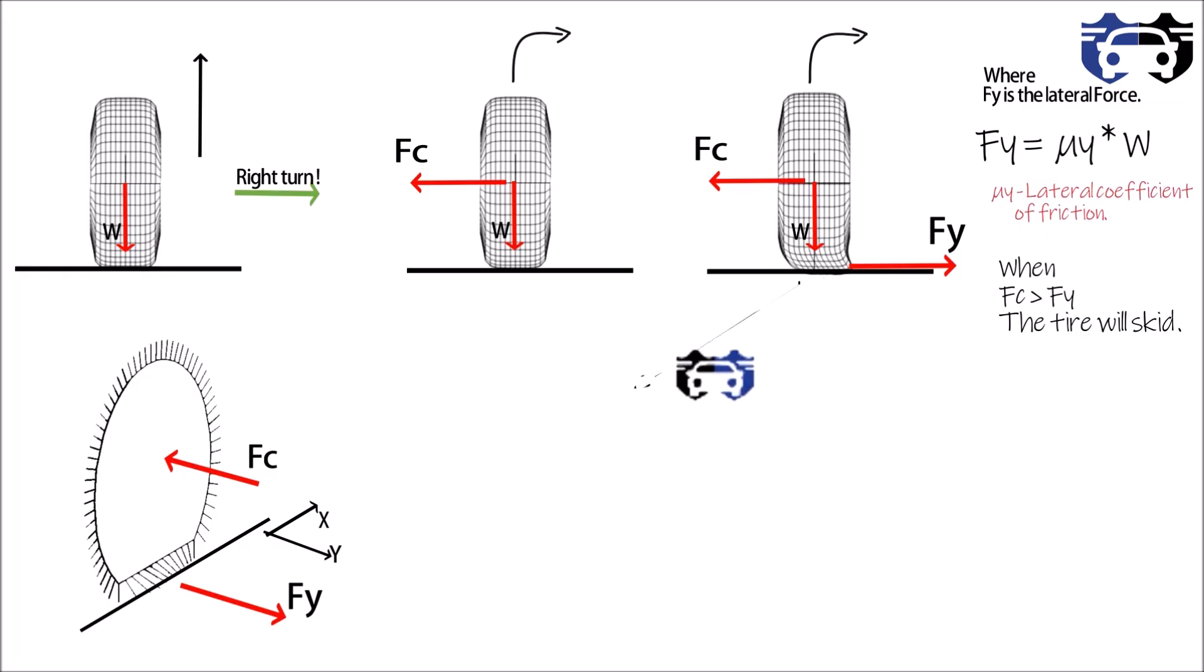Now let's see what is happening at the bottom of contact patch. This is your contact patch and these are the center lines C1 and C2. This is the forward moving force Fx, the centrifugal force Fc, and the lateral force Fy.